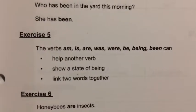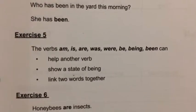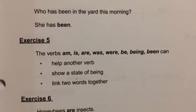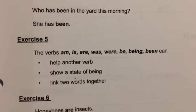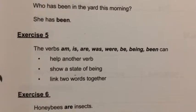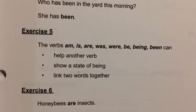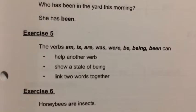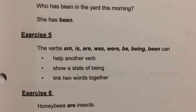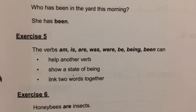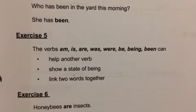Look at exercise five. The verbs am, is, are, was, were, be, being, and been can do all of these things — they can either help another verb, show a state of being, or link two words together. Remember how I said you are students, and you are daughters, and you are also sisters, but you're still just you? Well, am, is, are, was, were, be, being, and been are the same way. They can be these things in different situations.